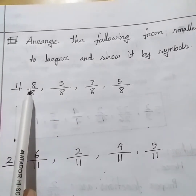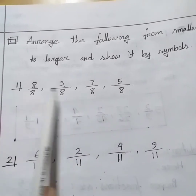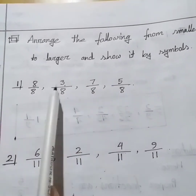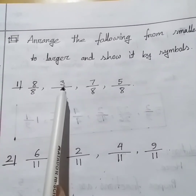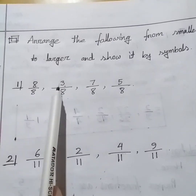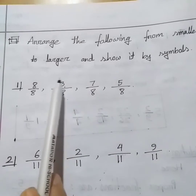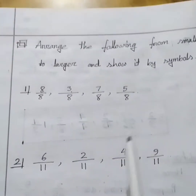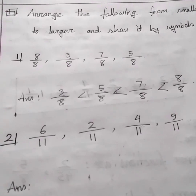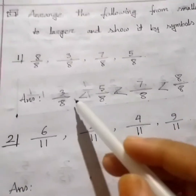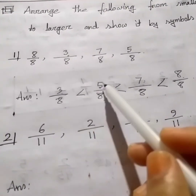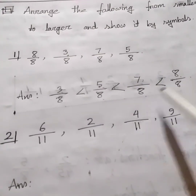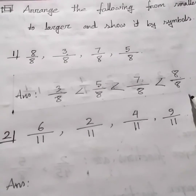So here among the numerators — 8, 3, 7, 5 — which one is smallest? 3. 3 is smallest. So the fraction 3 over 8 has the smallest value. Hence, the answer is: 3 over 8 is less than 5 over 8 is less than 7 over 8 is less than 8 over 8.